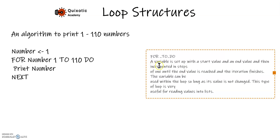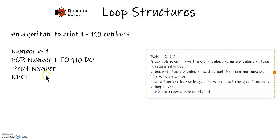In summary, a FOR loop is used when you have a variable with a known start value and a known end value, and the increment is handled automatically. The loop runs until the end value is reached. You should not change the loop variable inside the loop body — it should only be changed by the loop itself. For loops are especially useful for reading or printing values from a list.